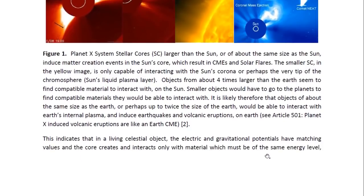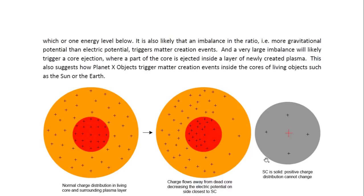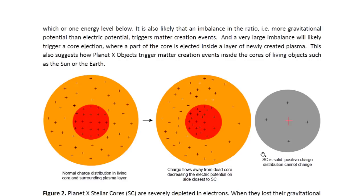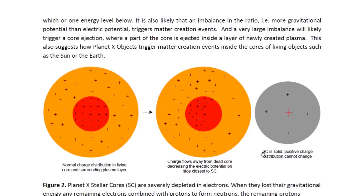This indicates that in a living celestial object, the electric and gravitational potentials have matching values, and the core creates and interacts only with material of about the same energy level, or one energy level below. It is also likely that an imbalance in the ratio — more gravitational potential than electric potential — triggers matter-creation events. A very large imbalance will likely trigger a core ejection, where part of the core is ejected inside a layer of newly created plasma. This also suggests how Planet X objects trigger matter-creation events inside the cores of living objects such as the Sun or the Earth.